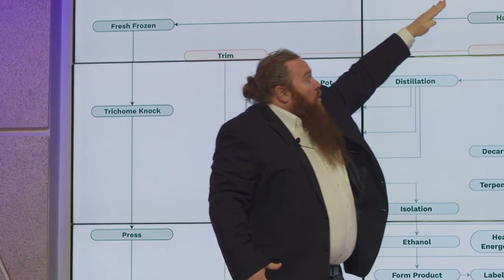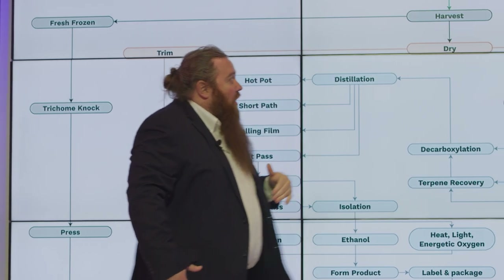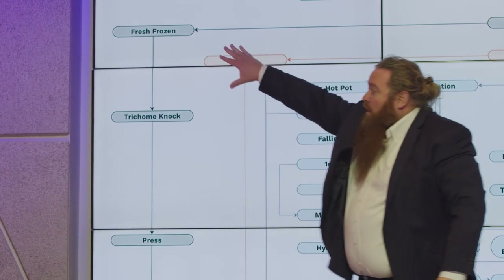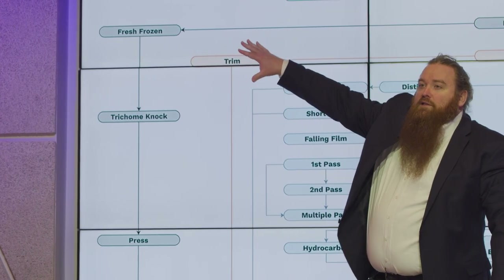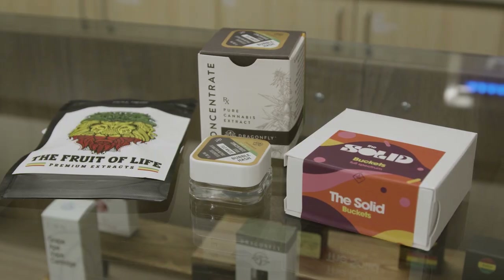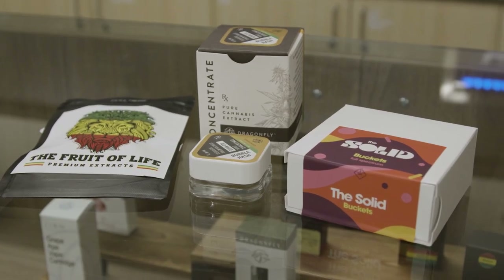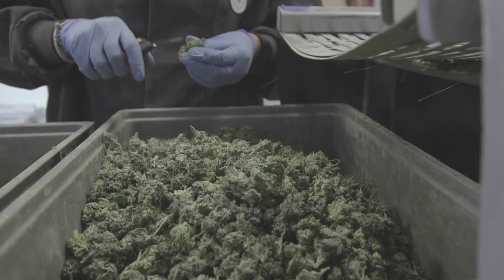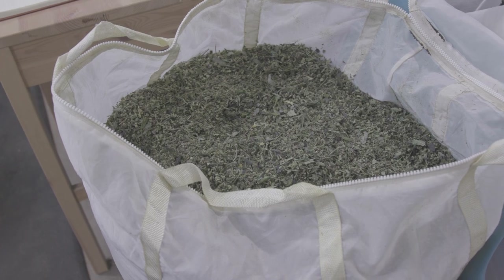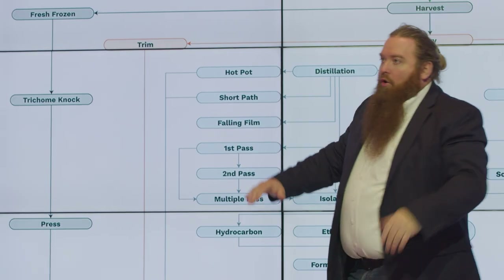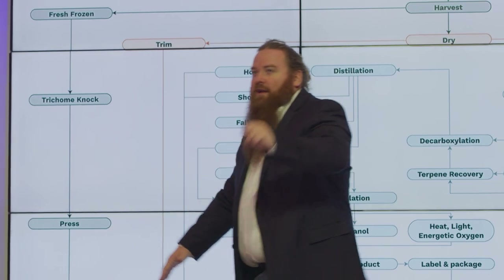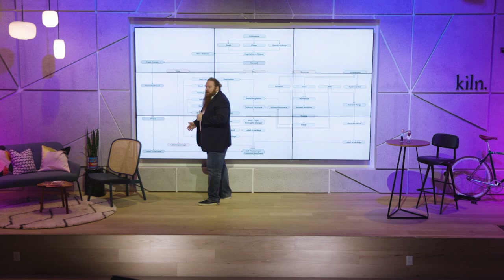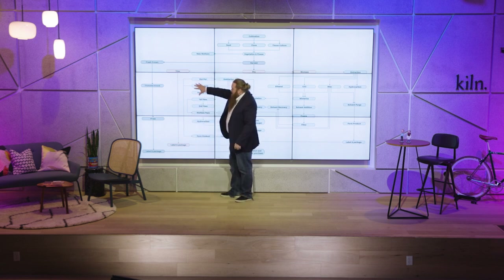Once we get through the flowering stage we go to harvest. Harvesting can lead to fresh frozen processing, where you start making rosins and various other products. You do a trichome knock — those are the little chemical factories on the plant. You knock off those trichomes and press them. You can do cold pressing or hot pressing; hot pressing gives you live rosin, which is a honey color and very popular.